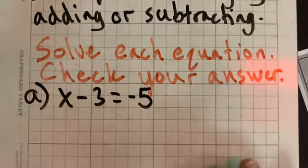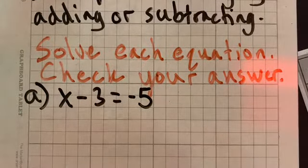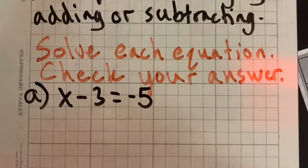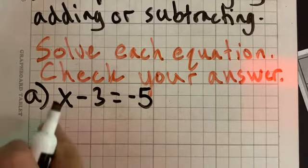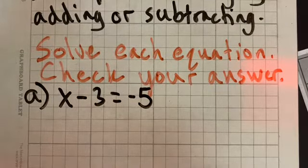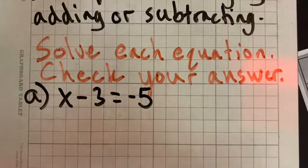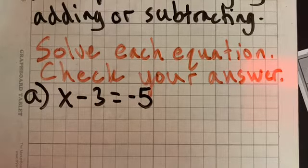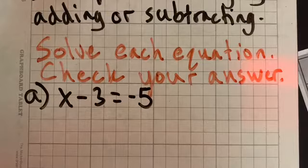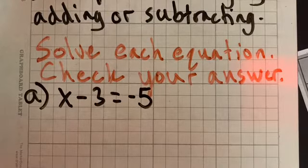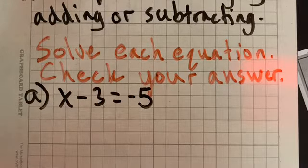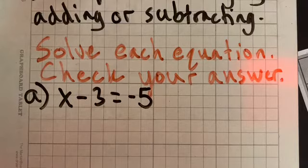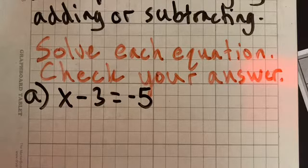So here's our first problem: X minus 3 equals negative 5. My goal is to isolate X. There's so many ways to think about how we're doing this problem. Some of you might be able to tell me, oh, I already know what the answer is just by looking at the problem. That's fine and all, but eventually we're going to do some harder problems. And if you don't know how to go do these problems step by step, you're going to have difficulty doing the rest. So please follow along.